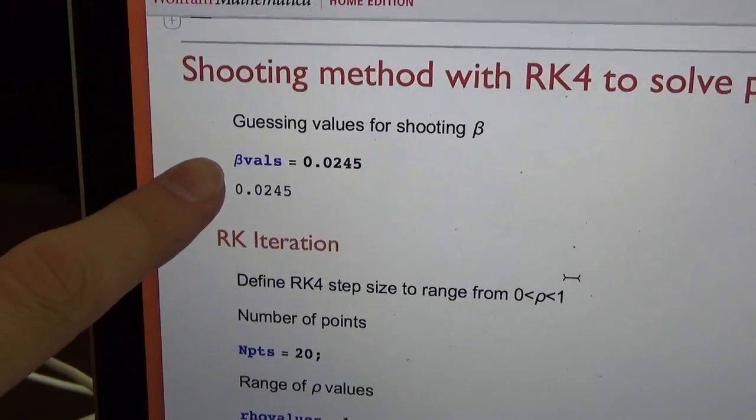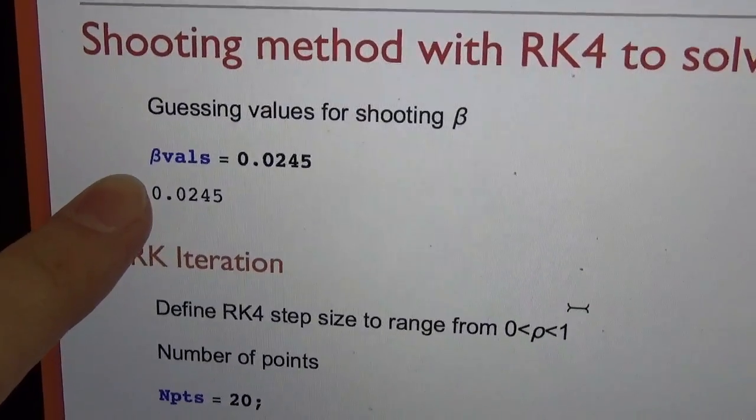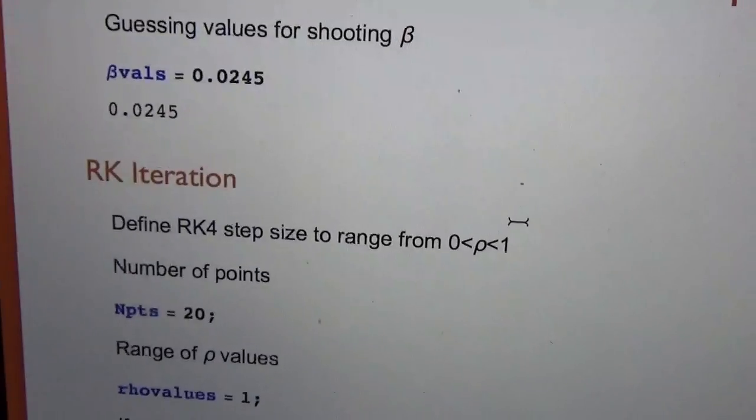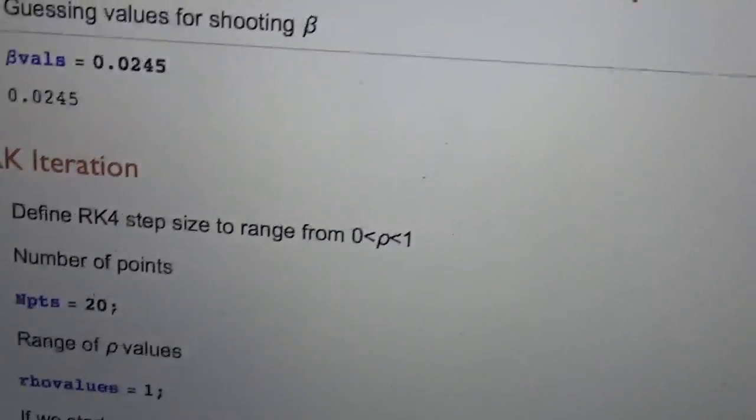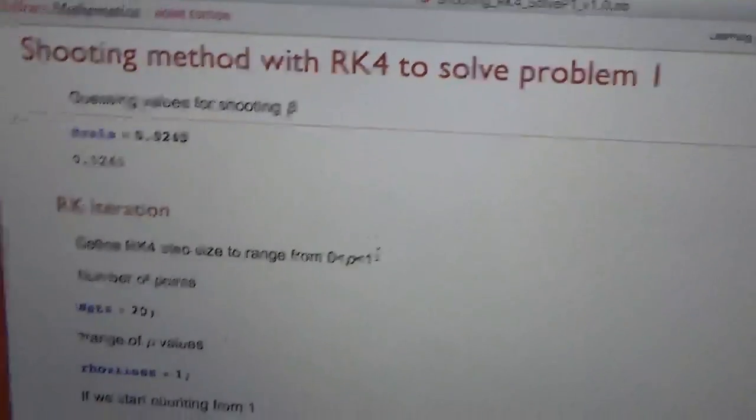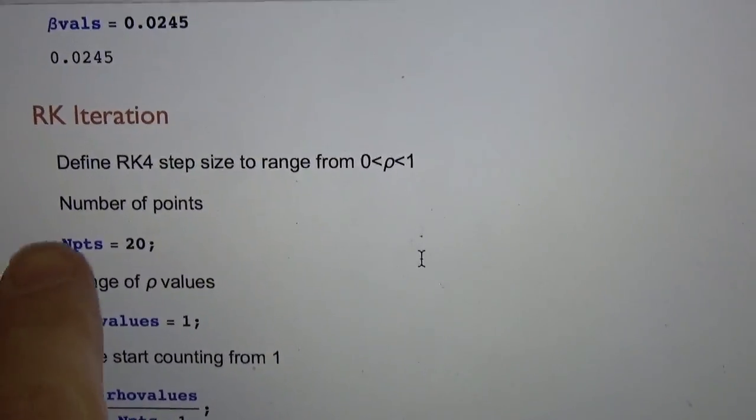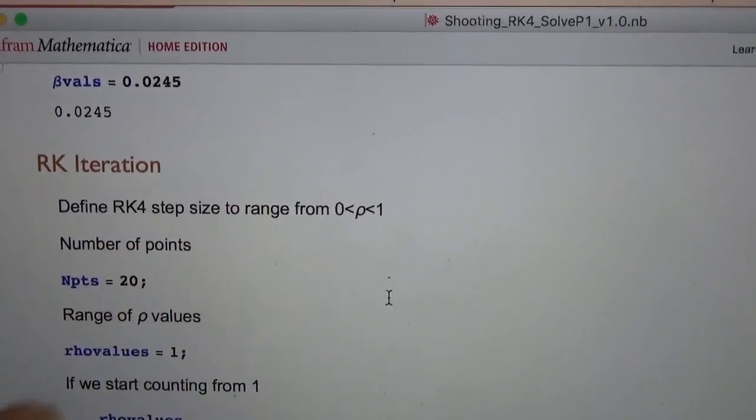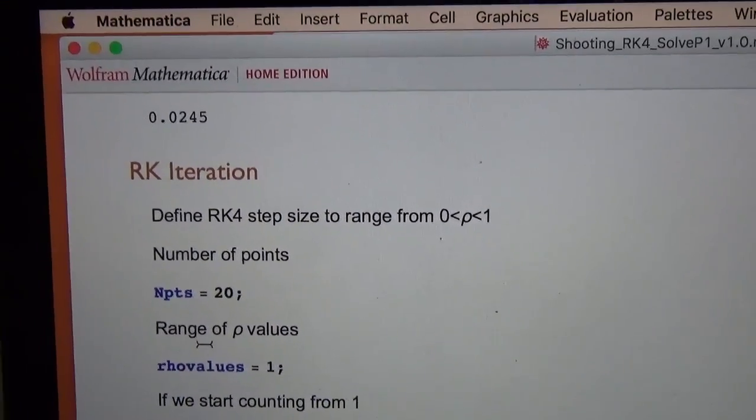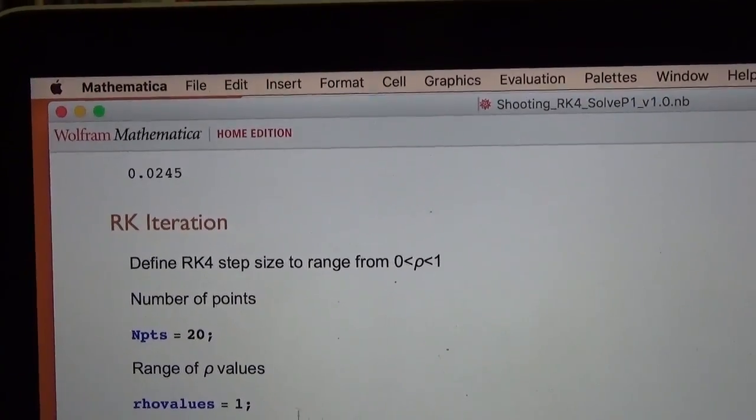Here I'm calling beta values, that is my shooting parameter. Then I cut the problem into 20 parts ranging from 0 to 1. So the range of rho, rho has a total range of 1 from 0 to 1.